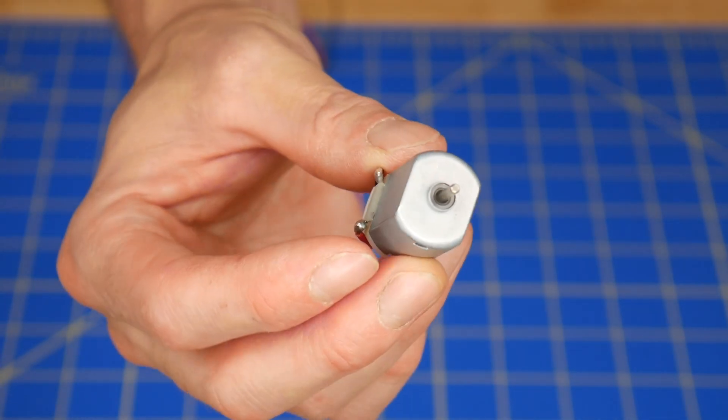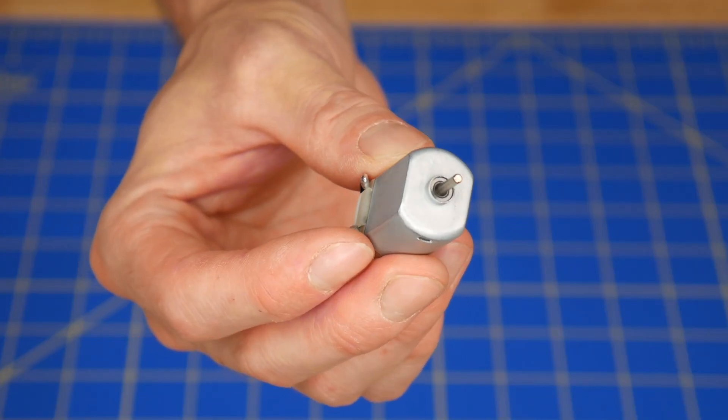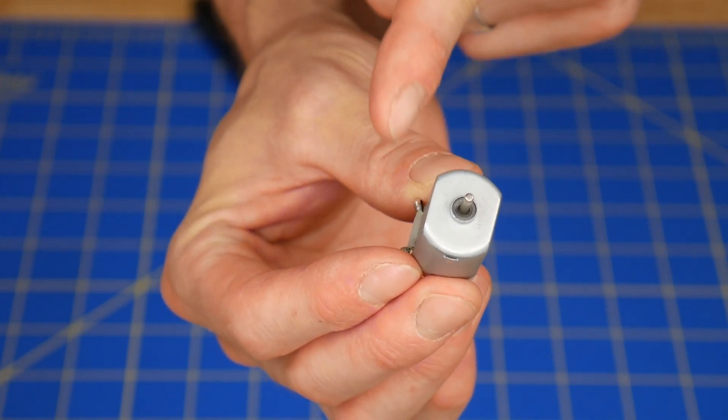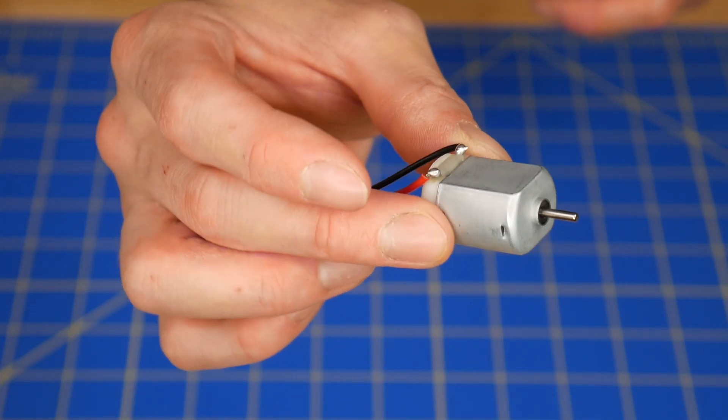Okay, next and most crucially is the motor. Use the cheapest motors that you can find that have this metal housing with two flat sides. These ones tend to have the right amount of power. And speaking of power, all you need for this project is a single AA battery holder.